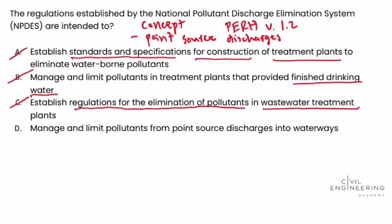Answer choice D says: manage and limit pollutants from point source discharges into waterways. It's managing and limiting pollutants — we like that. It's managing them from point source discharges — yes, that sounds good. Into waterways — yes, that is correct. So answer choice D is the correct answer.